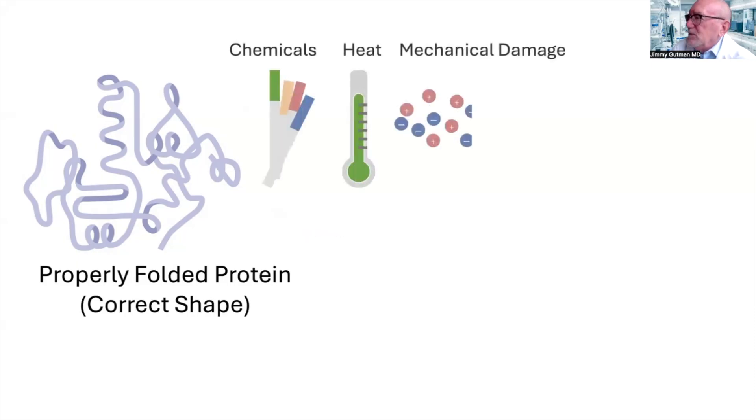Now many proteins, including Immunocal, can be very sensitive to being damaged, whether it's from heat, whether it's from chemicals, whether it's from agitation or other mechanical stresses. And these causes damage to the protein. And it causes the protein to denature.